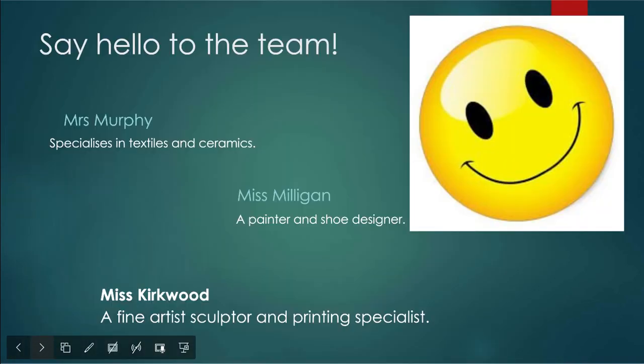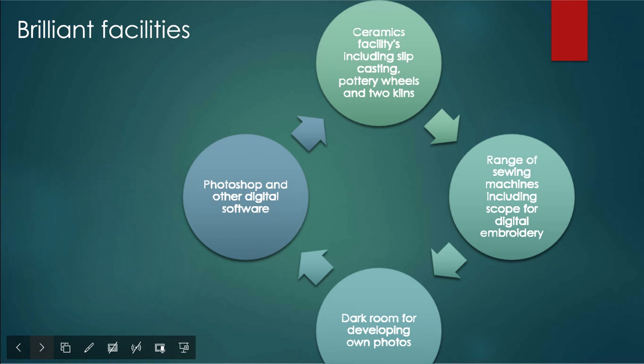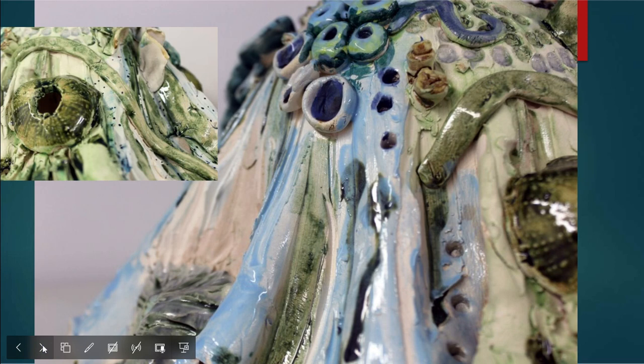The team is myself, Miss Milligan, Miss Kirkwood and Mr Murphy our technician. We've got amazing facilities including ceramic stuff — we've got a couple of potter's wheels and some kilns, we've got a whole massive range of sewing machines that you'll learn to use, we've got a darkroom for developing your own photographs and we've got digital photography software on the computers in the room. Then we've got all drawing and painting facilities and easels. We're very lucky with our supplies. Here's a lovely ceramic piece where a student managed to experiment a lot with glazes.